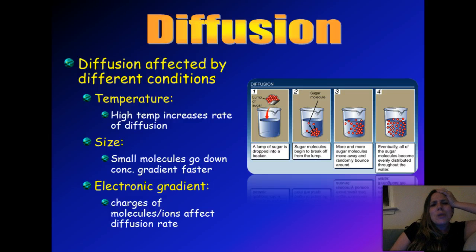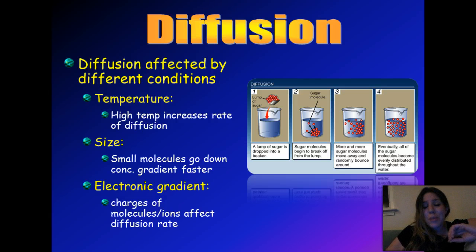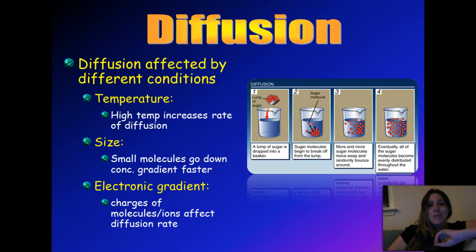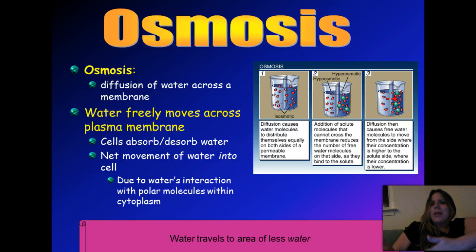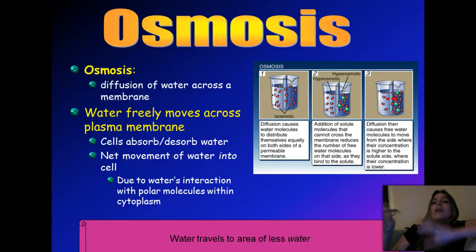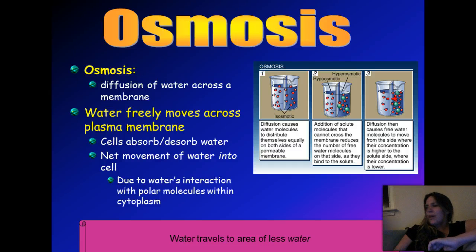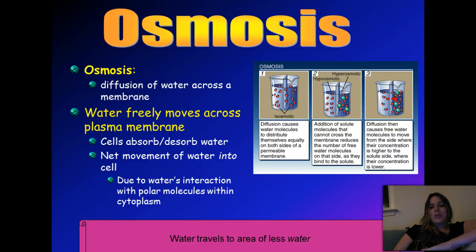Why learn diffusion and osmosis? This principle is so important for every system in the body — the way kidneys function, the way the heart functions, the way nerve impulses go through your neurons. It's all based on these principles. Osmosis is just the diffusion of water across a cell membrane — a fancy name for diffusion because you're talking about water. You're going from areas of high concentration of water to areas of low concentration. Water is a small enough molecule to pass freely across the cell membrane without any helpers.